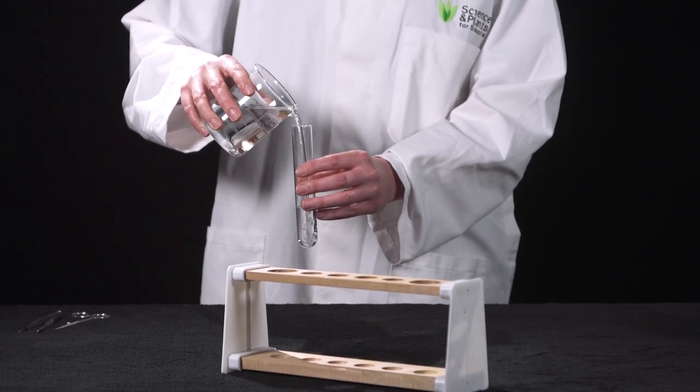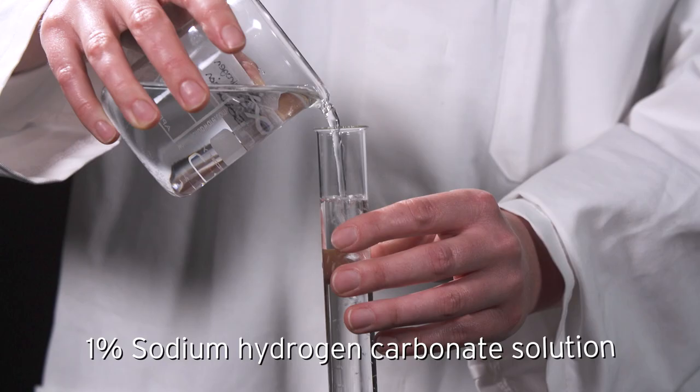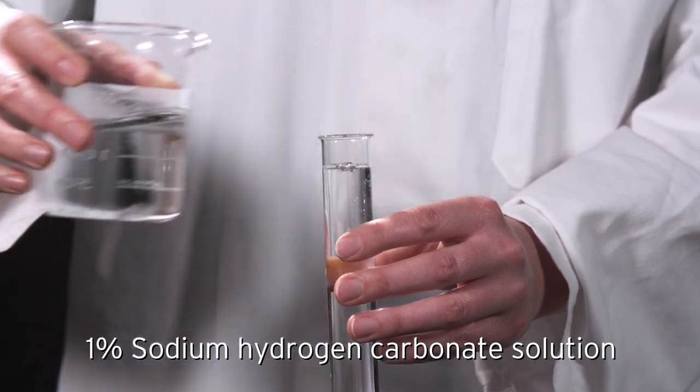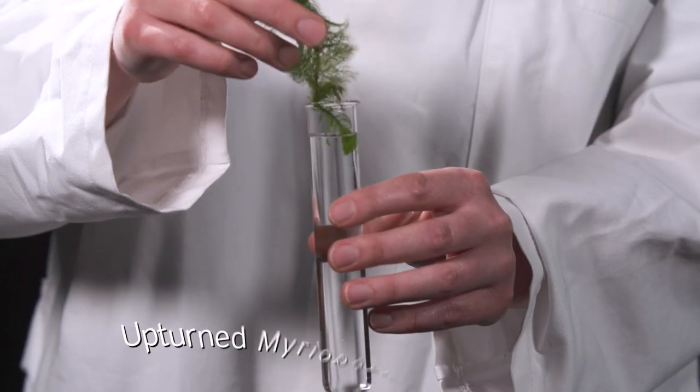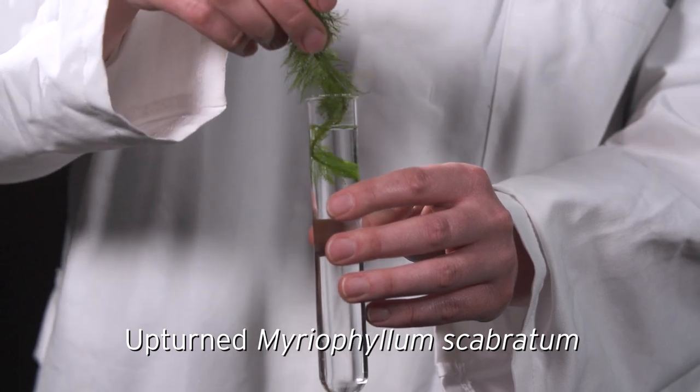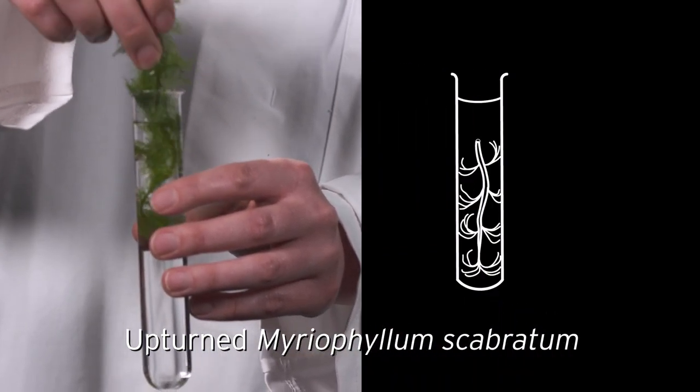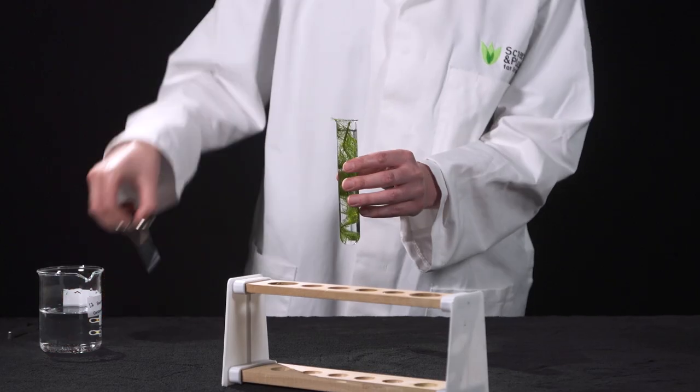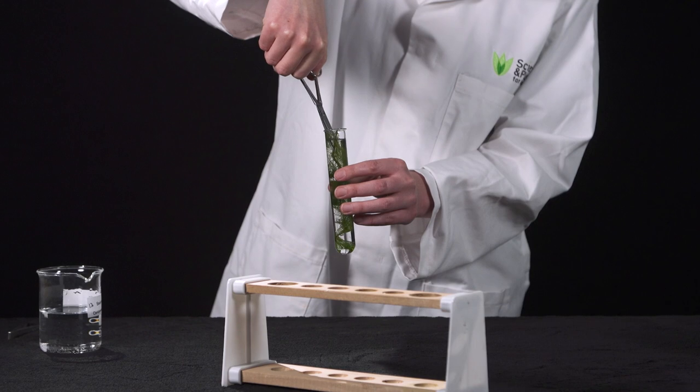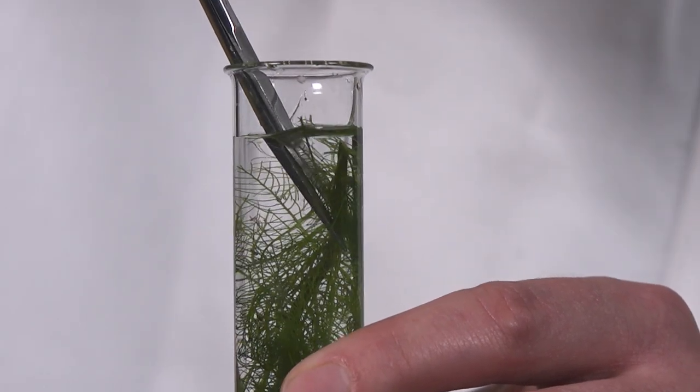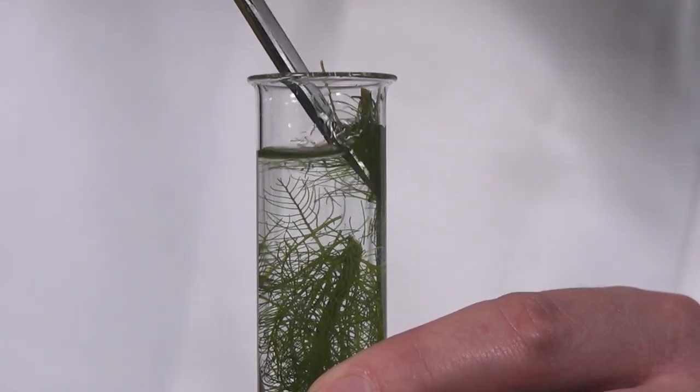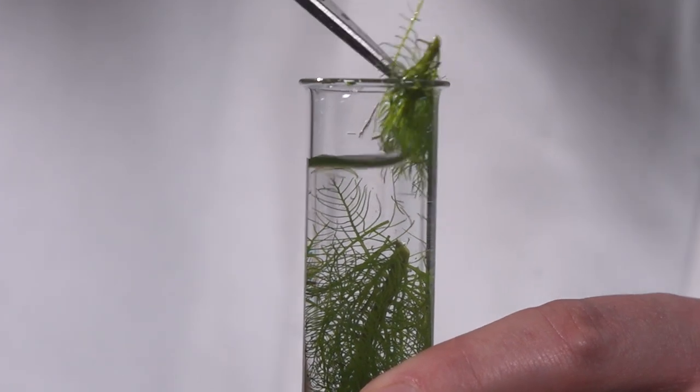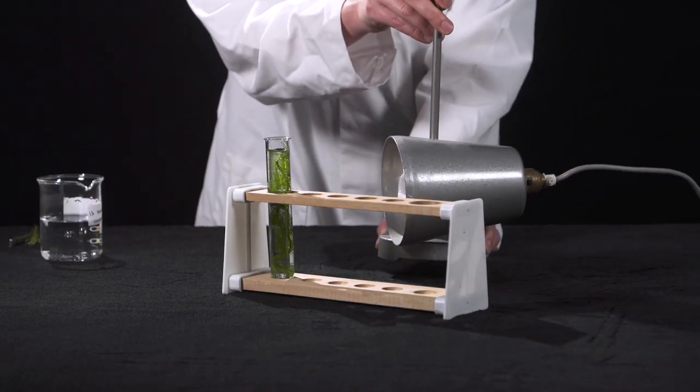The bubbling pondweed setup is versatile and can be used in different ways for different groups of students. It can be set up by simply filling a boiling tube with 1% sodium hydrogen carbonate solution, and placing a piece of pondweed in it, cutting the stem under the level of the liquid. Cutting the stem at an angle under the surface of the liquid is important because it stops an airlock from forming, which would stop bubbles from being able to escape.